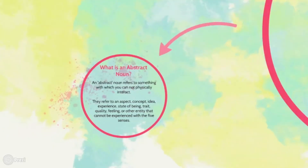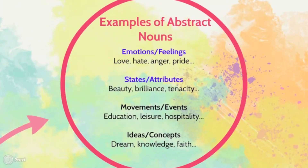Examples of some abstract nouns are things like emotions or feelings — so love, hate, anger, and pride. They are all nouns but they are things with which we cannot physically interact, so they are abstract nouns. We've also got states and attributes, such as beauty, brilliance, and tenacity.